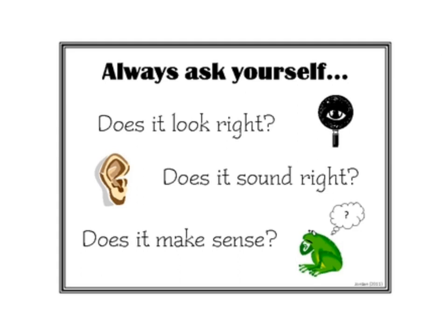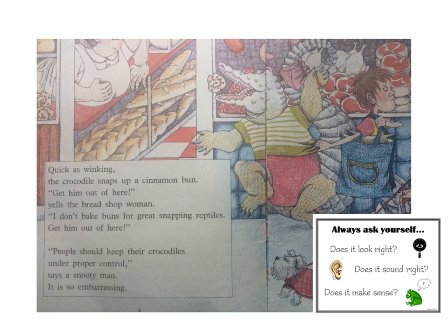Now I'm going to think about using the strategy 'does it sound right' to self-monitor. Let's read this page: Quick as winking, the crocodile snaps up a cinnamon bun. Get him of out here, yells the bread shop woman. I said 'get him of out here' — does that sound right? Is that how we talk? No, it doesn't sound right, so I need to go back and try again. Get him out of here. That sounds better.